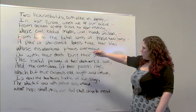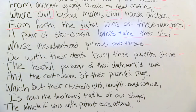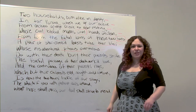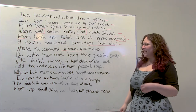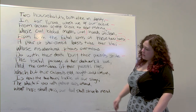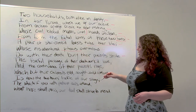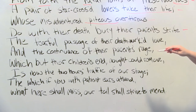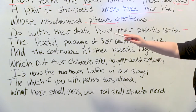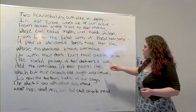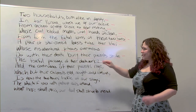'Whose misadventured, piteous overthrows do with their death bury their parents' strife.' The word 'piteous' always stands out — you have that nice plosive P sound. Misadventured means there's going to be some struggle. Piteous overthrows — they're trying to get together and they can't. Do with their death bury their parents' strife — the only thing that is going to make the parents bury the hatchet is their children's death.